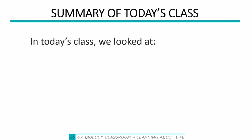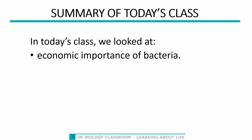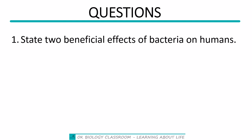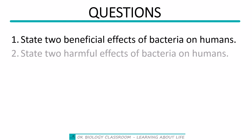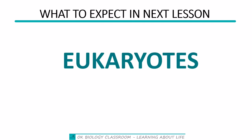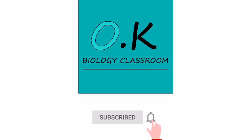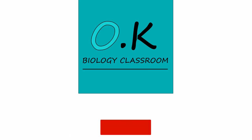So that is what we have for our lesson today — the economic importance of bacteria. As review questions: state two beneficial effects of bacteria on humans, and state two harmful effects of bacteria on humans. This brings us to the end of prokaryotes. Next we are going to look at eukaryotes, which are the most advanced form of cells. Join us as we start with eukaryotes, and don't forget to subscribe to our YouTube channel so you are always updated on new videos.